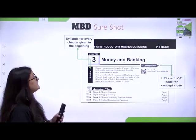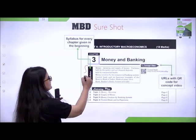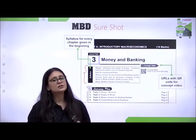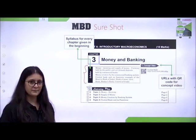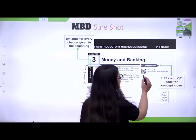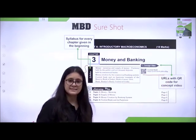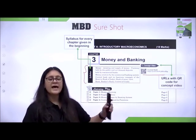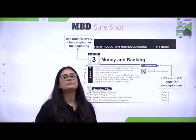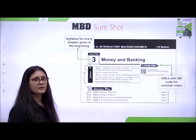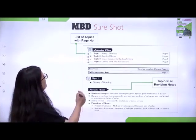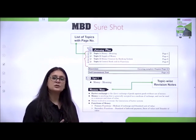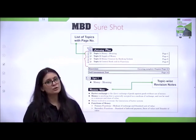As the chapter begins, the detailed syllabus has been given at the top. CBSE has deleted some topics for this session, and only the topics which are in the syllabus have been explained. A QR code with URL has been given for better understanding through a video of the concept — just scan the QR code and an additional resource is available for in-depth study. You can also see the list of topics with their respective page numbers, so if you want to study a particular topic, you can simply skip to the mentioned page number.